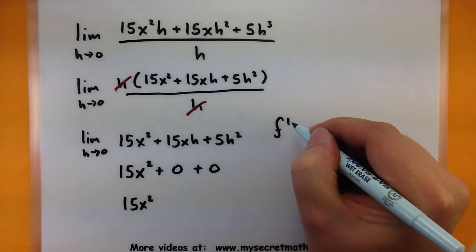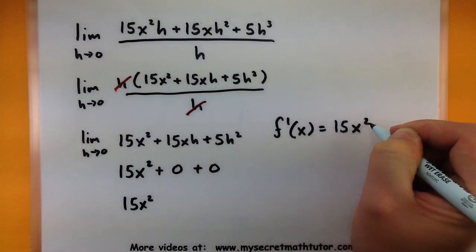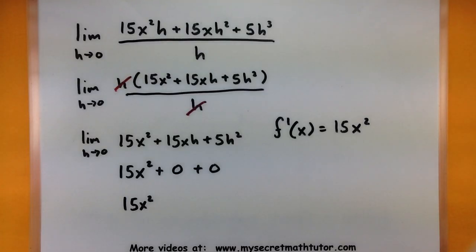So now we can say that the derivative of our function is 15x squared. And just like that, we're done.